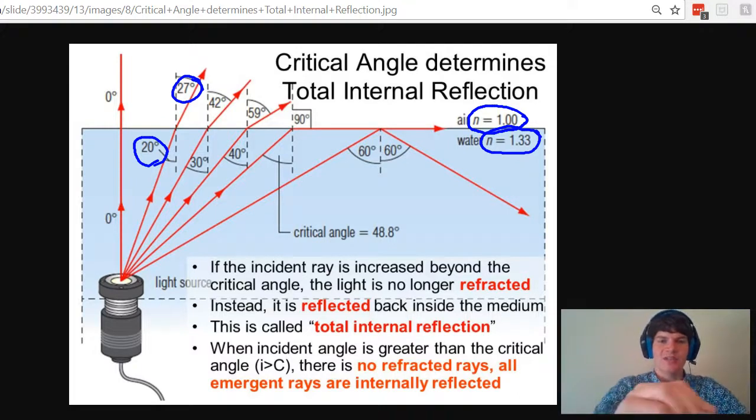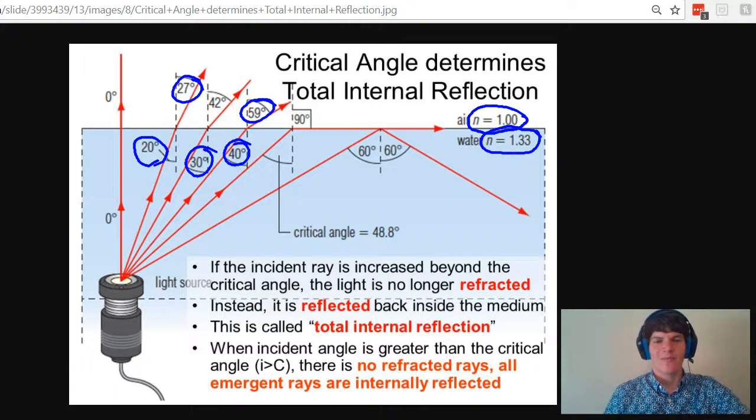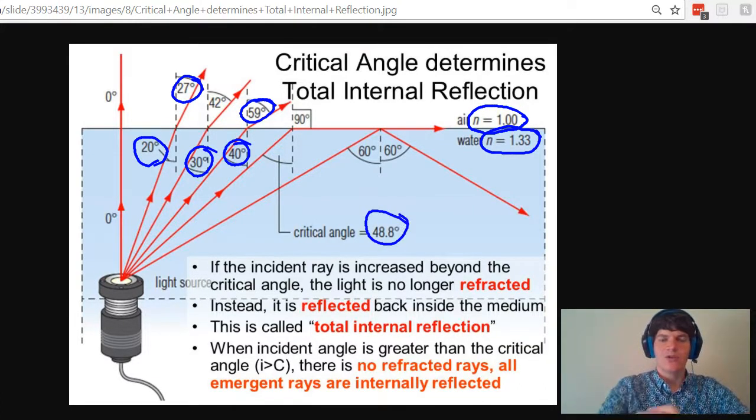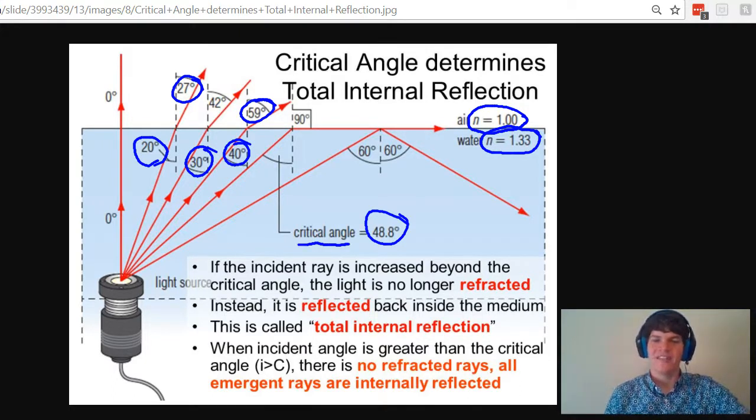And as we continue to increase the incident angle on the surface of this water, notice that this angle of bend is also increasing, until we reach a point at which the angle is so great that instead of passing into the other medium, it simply runs right along the surface. We call this angle the critical angle, and any angle that is above the critical angle results in total internal reflection.